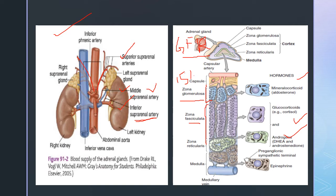The right inferior suprarenal artery arises from the right renal artery and the left inferior suprarenal artery arises from the left renal artery. Regarding veins, the right suprarenal vein drains directly into the inferior vena cava, while the left suprarenal vein drains first into the inferior phrenic vein, then the left renal vein, and then into the inferior vena cava.